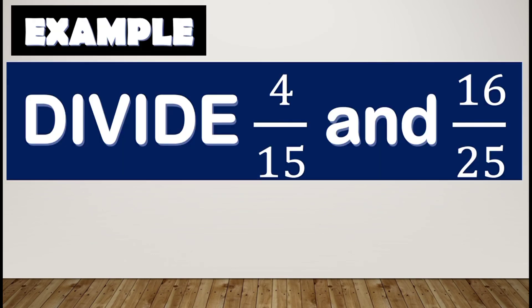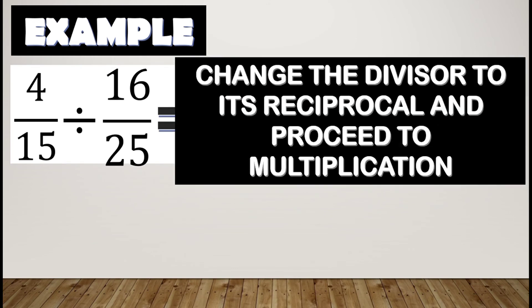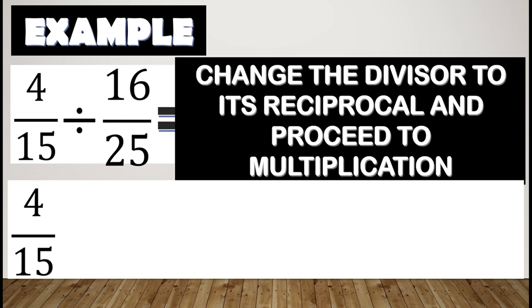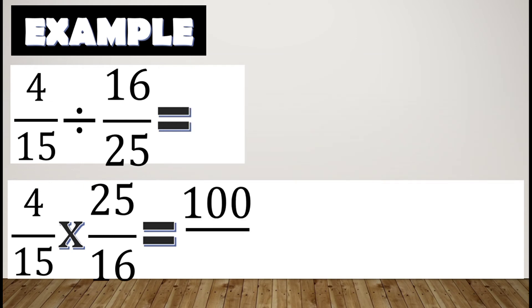Let us have our next example: divide four-fifteenths by sixteen over twenty-five. Again, we get the reciprocal of our divisor and proceed to multiplication. So we have four-fifteenths times twenty-five over sixteen. Multiplying numerator times numerator — four times twenty-five equals one hundred — and denominator times denominator — fifteen times sixteen equals two hundred forty.